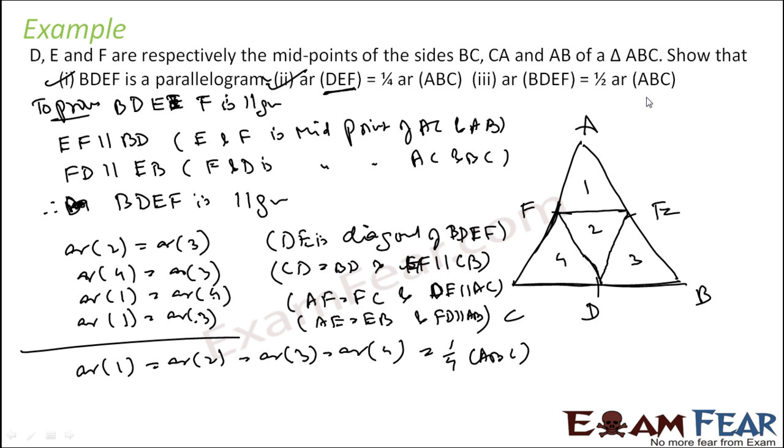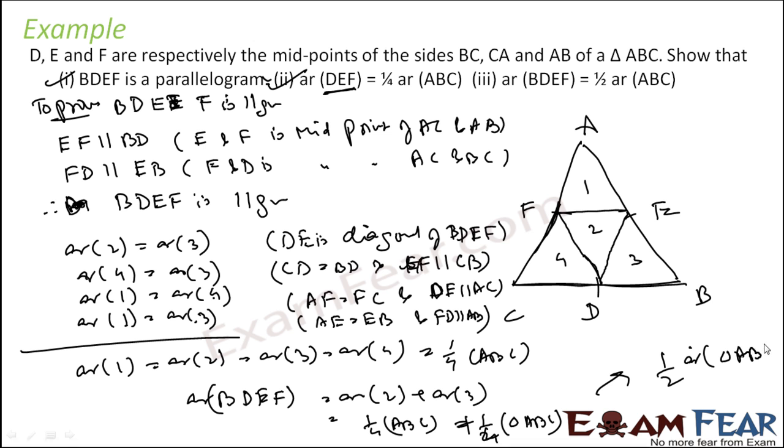Now since all of these are equal and four become ABC, I can say that area of DEF is nothing but one by four of ABC. Area of BDEF is equal to half ABC. If you add one by four, then you have one by half of area of ABC. So area of BDEF is equal to half of ABC.